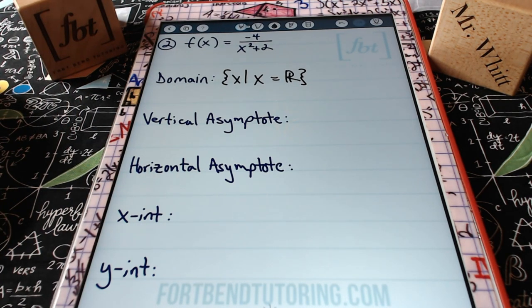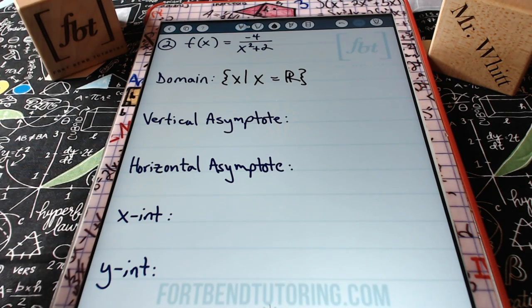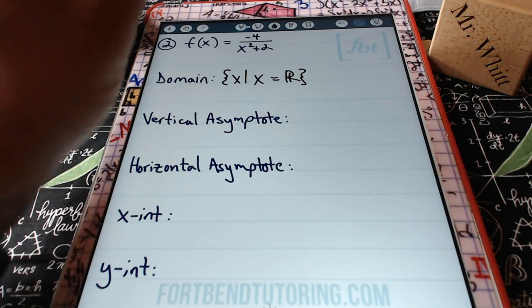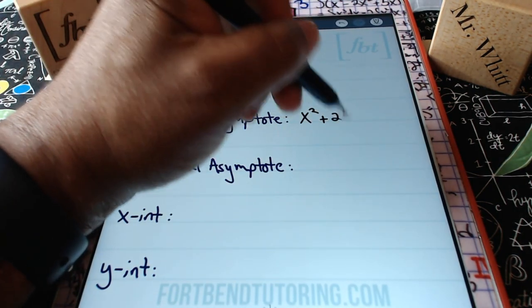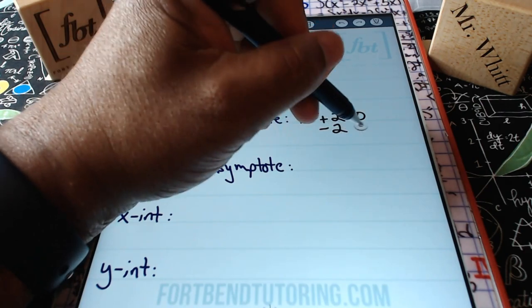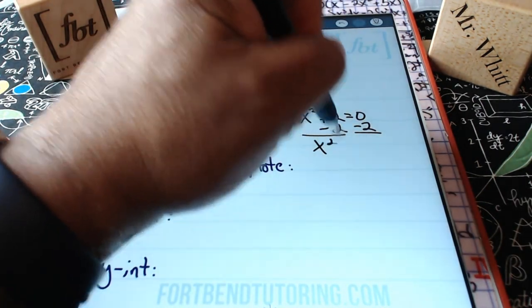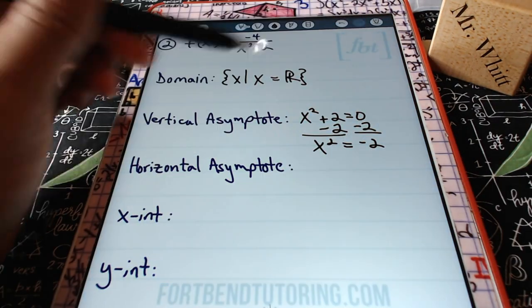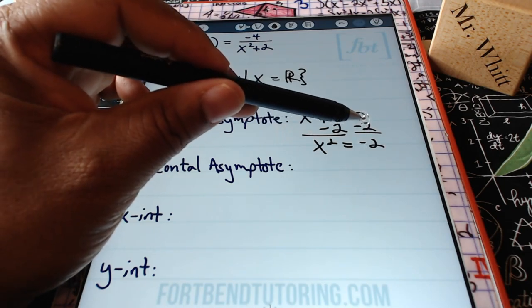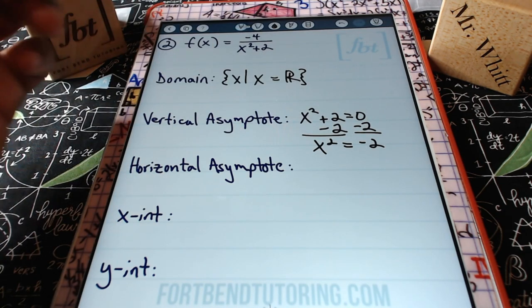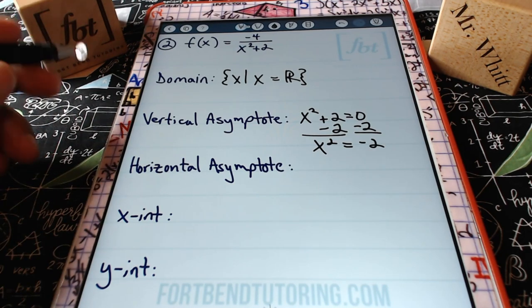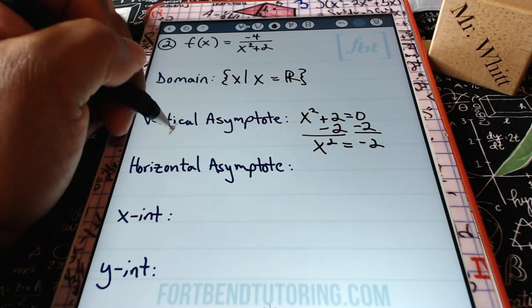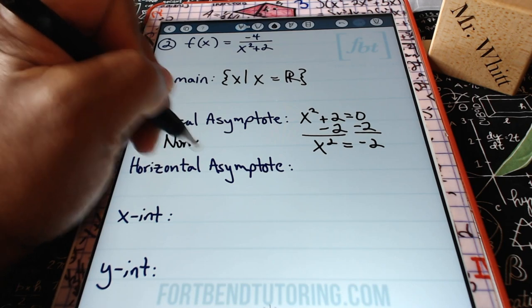Because the domain is all real numbers, there's no vertical asymptote. Setting x²+2=0 gives x²=-2, and taking the square root would yield imaginary numbers. So the correct answer for vertical asymptotes is none.